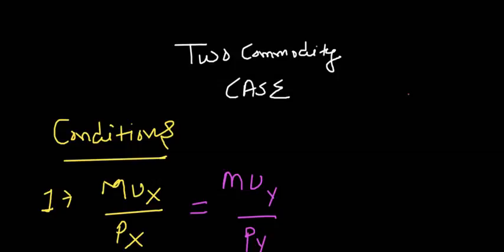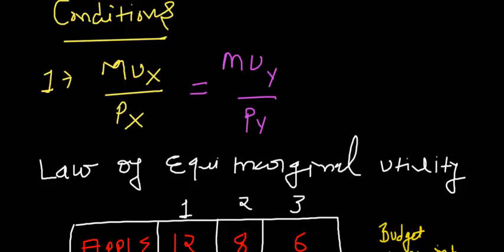Let's try to understand the two-commodity case for the cardinal utility approach given by Marshall. To compute consumer equilibrium when you are given two or more commodities, there are two necessary conditions which must be satisfied. The first condition says that marginal utility of X divided by price of X must equal marginal utility of Y divided by price of Y — referring to the law of equi-marginal utility.